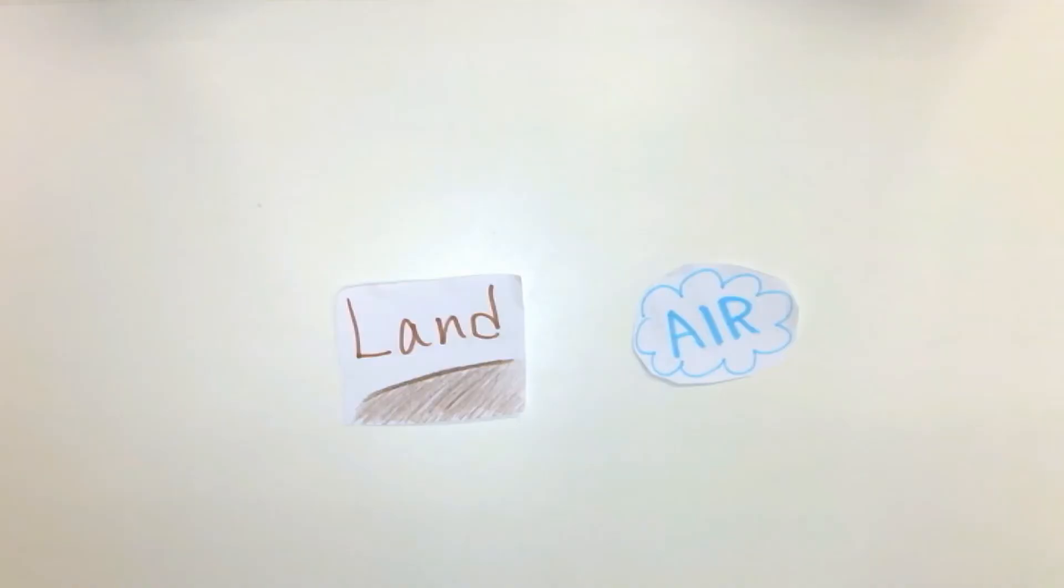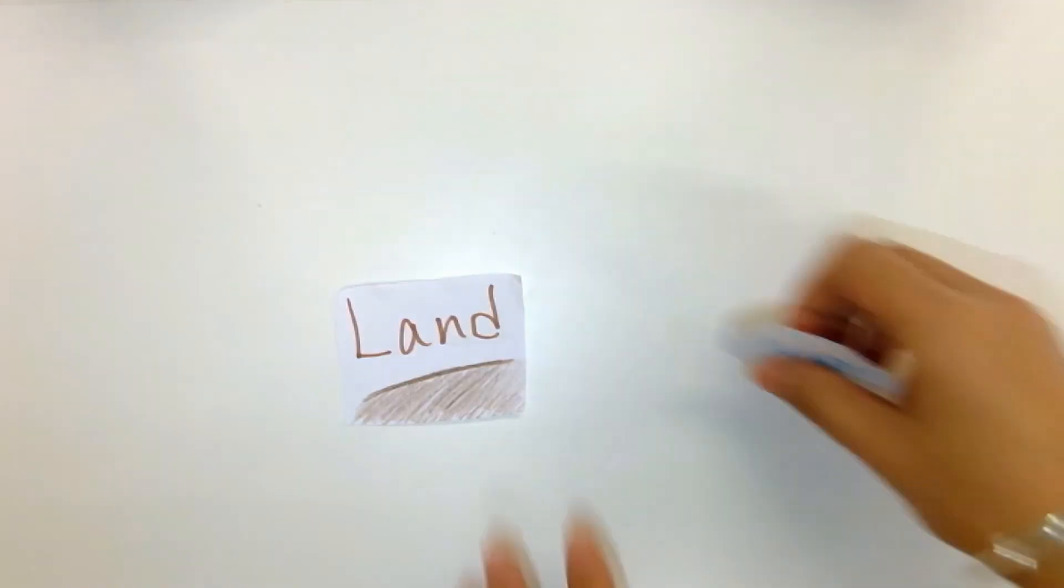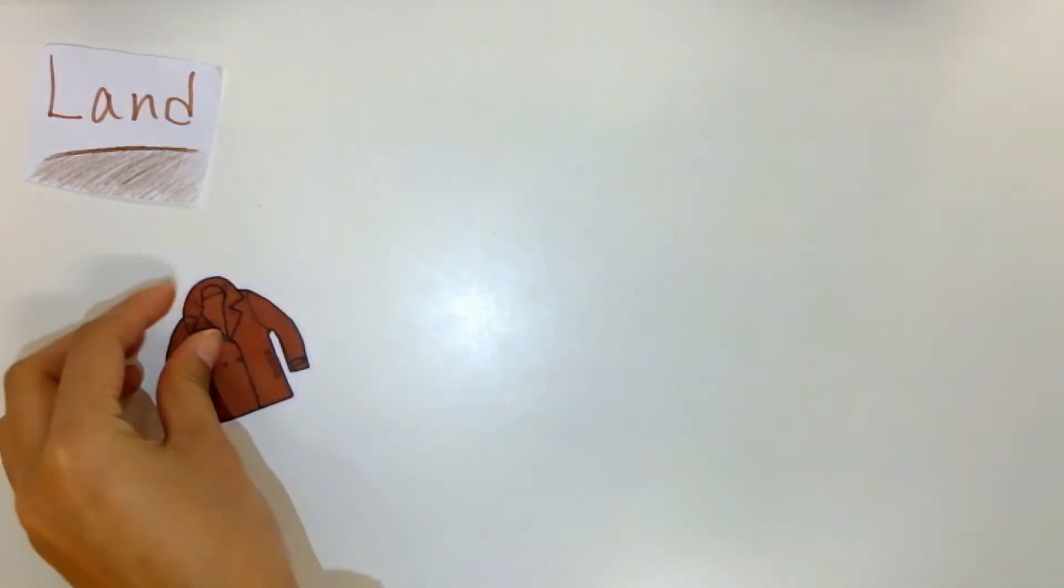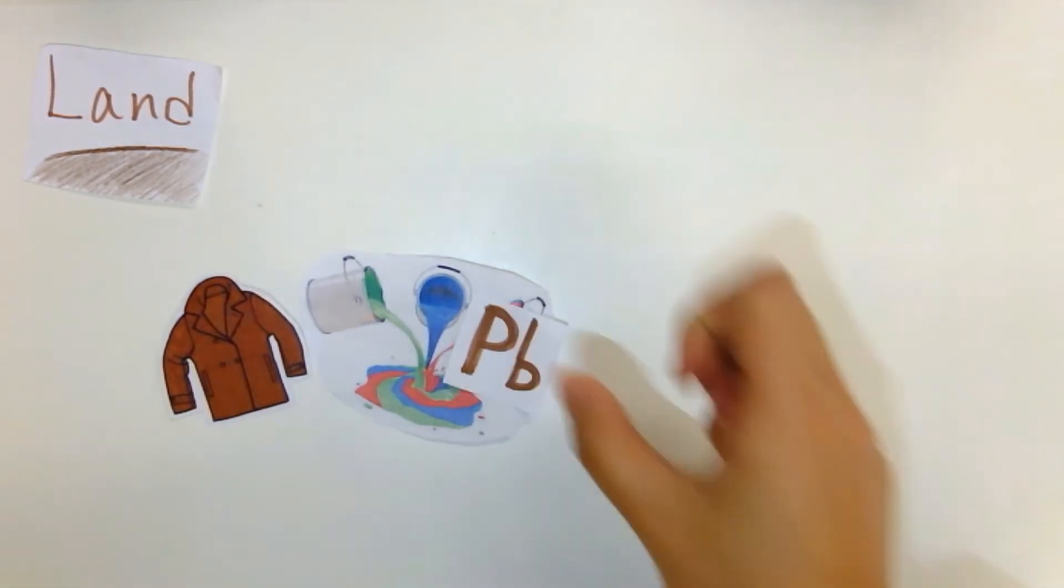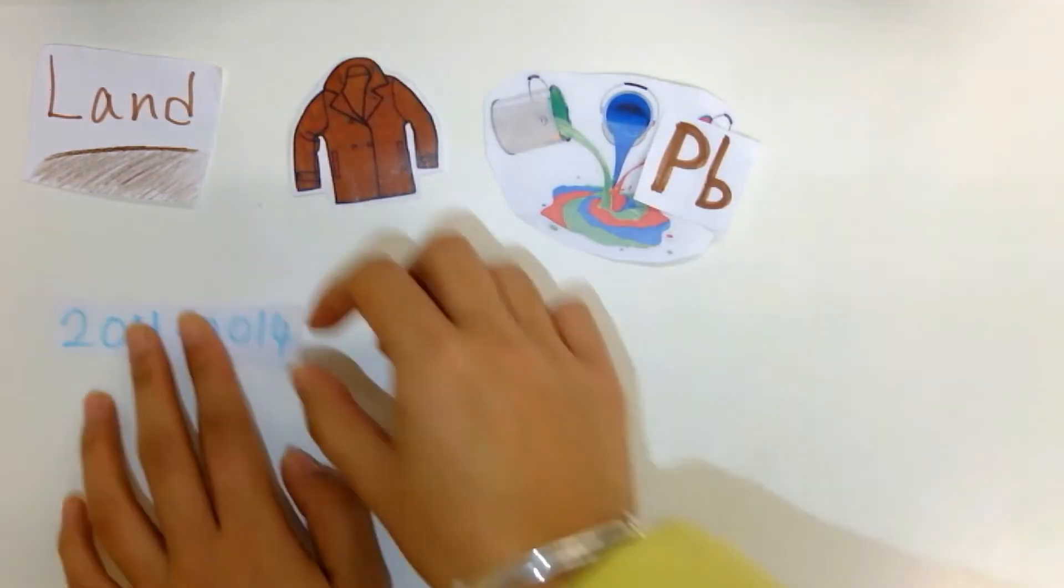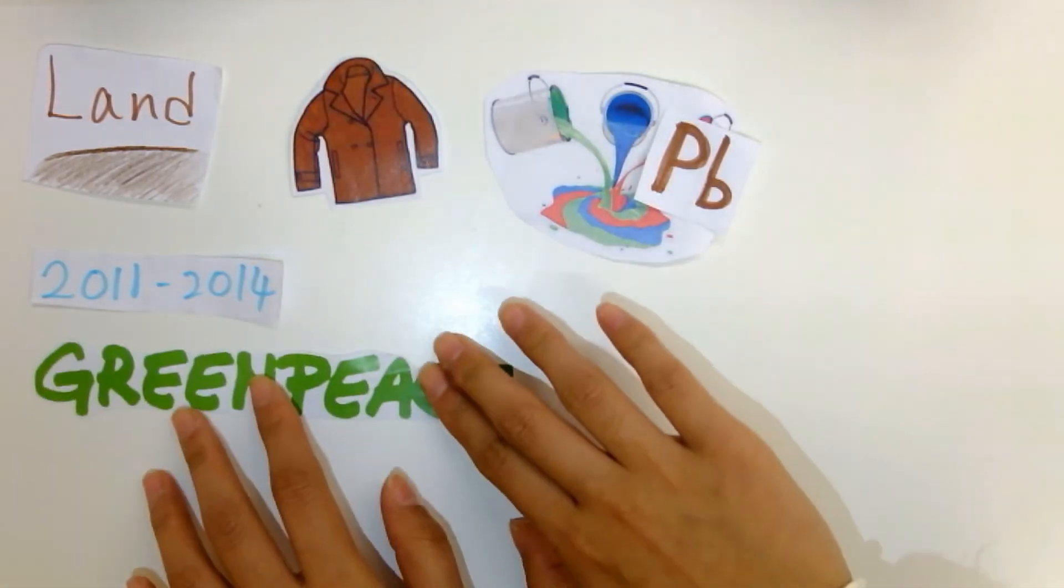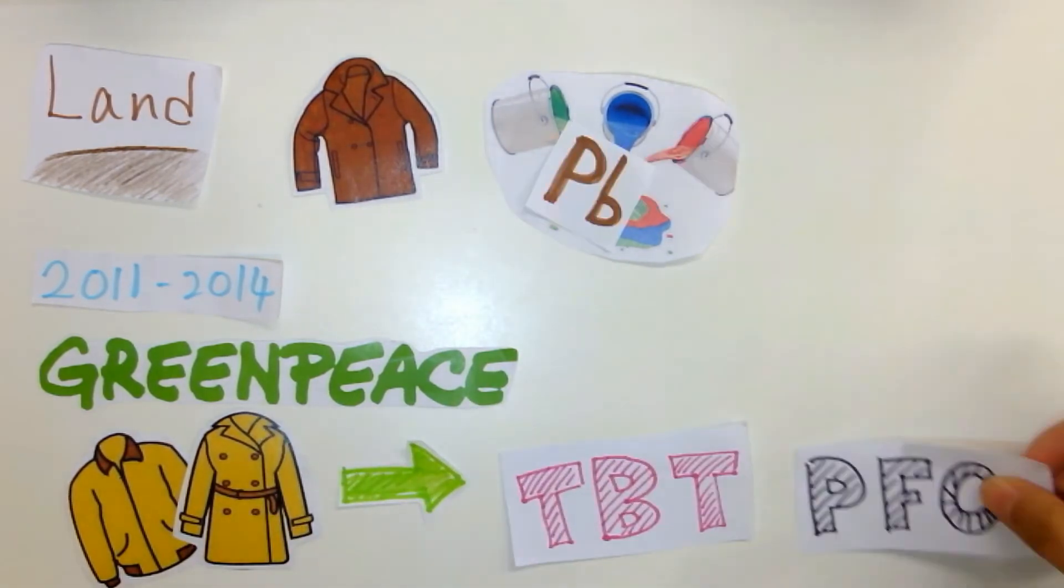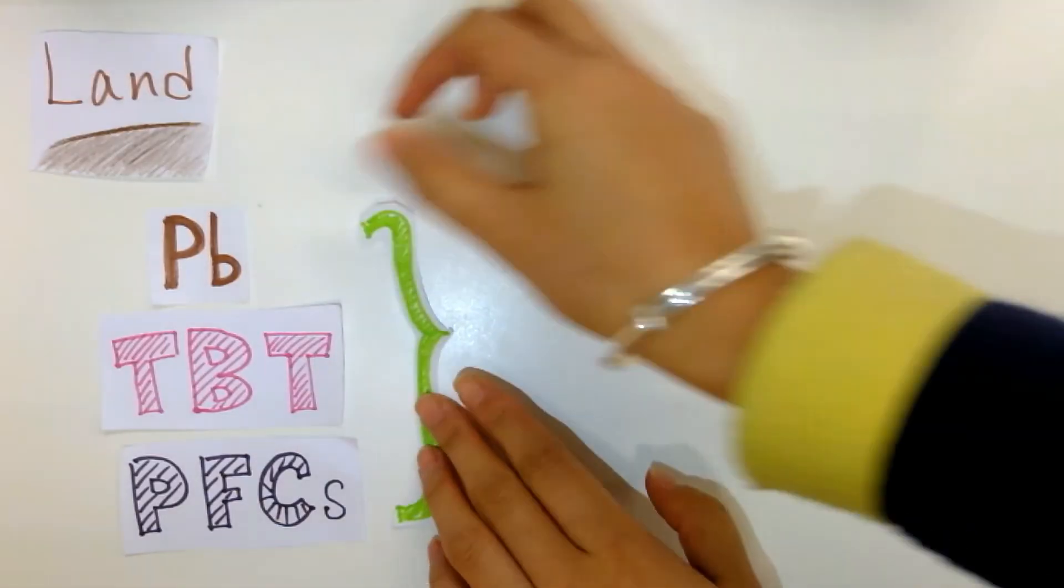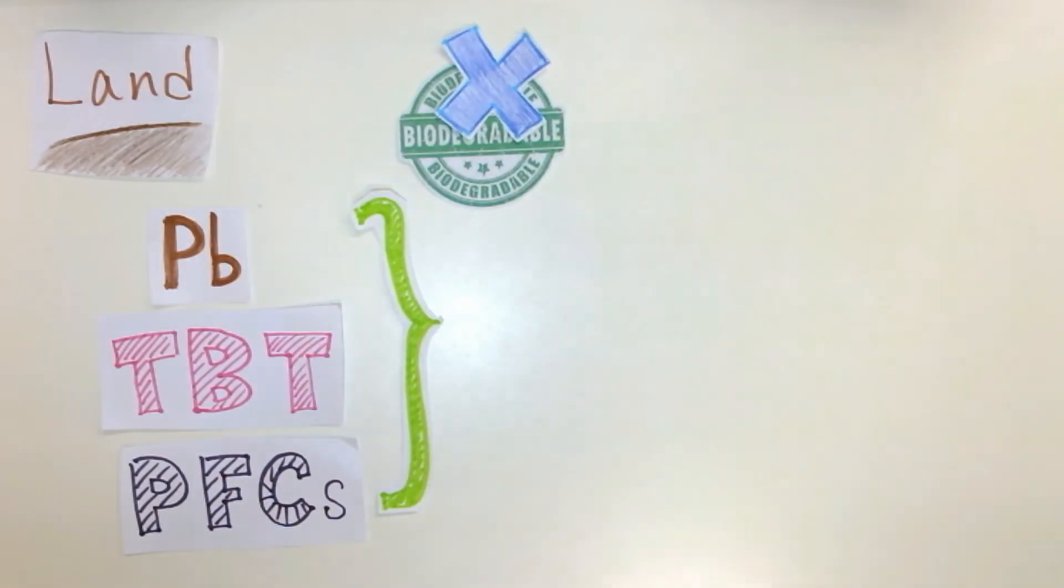Now the effects of waste pollution on land and air are discussed. For land, the dyes and coatings contain a few heavy metals like lead. In 2011 to 2014, Greenpeace discovered that coatings from different brands contain TBT and PFCS. All of them are non-biodegradable.